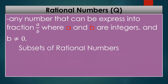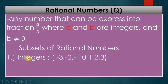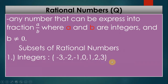Here are the subsets or kinds of rational numbers. The first one is integers: negative 3, negative 2, negative 1, 0, 1, 2, 3. So why are integers called rational numbers? Because all of these numbers can be expressed as fractions. We could change negative 3 into a fraction, as with negative 1, 1, 2, and 3.